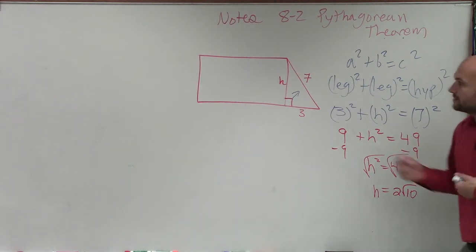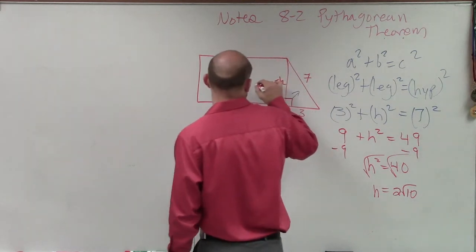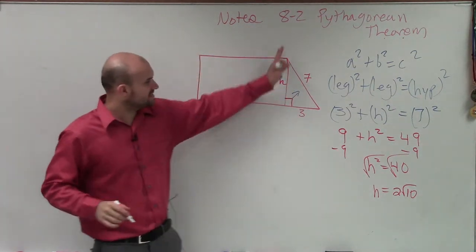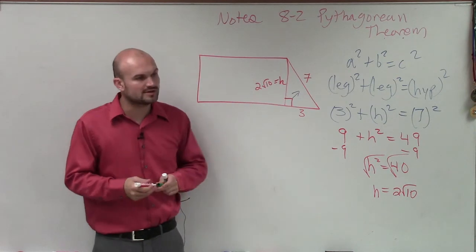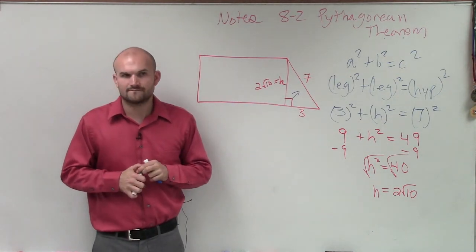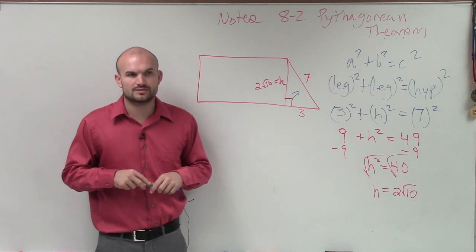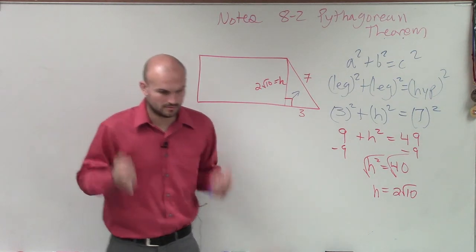All right? So therefore, you could say this distance of the leg is 2 square root of 10. OK? Make sense? Any questions? Cool. All right.